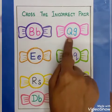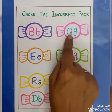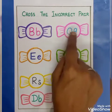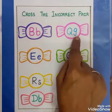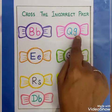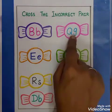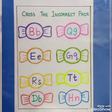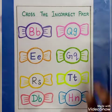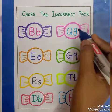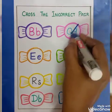Next one. This is capital letter Q. This is small letter G. This pair is correct? No, this pair is incorrect. So we have to put cross.